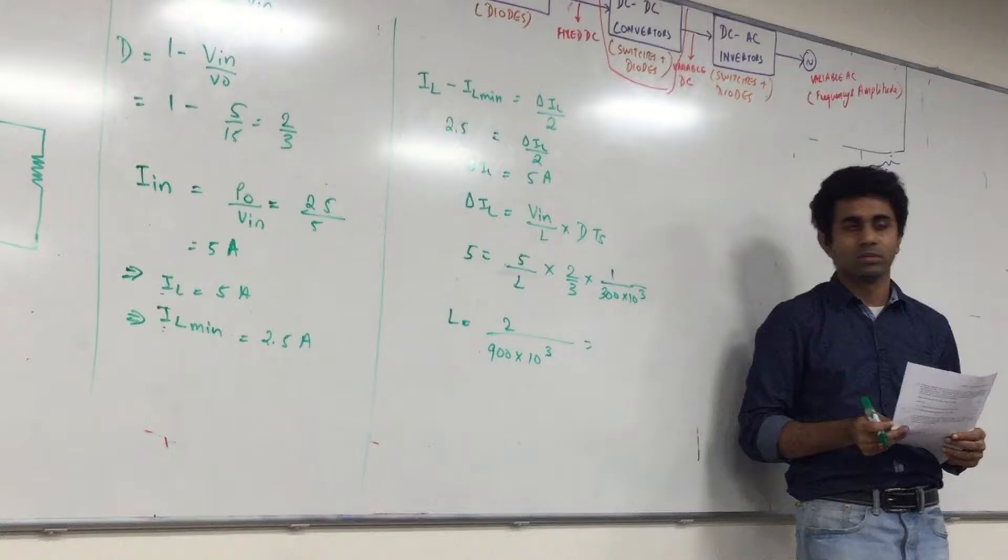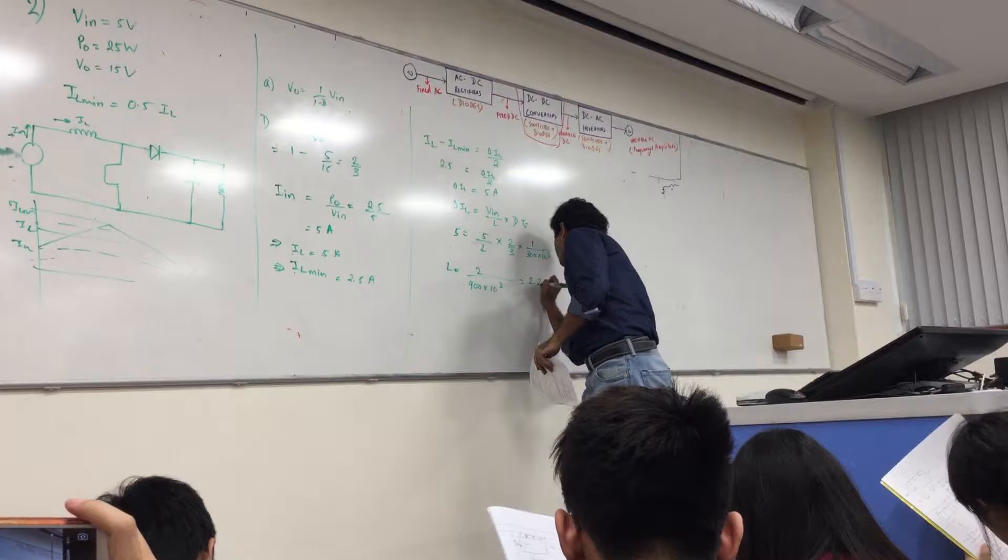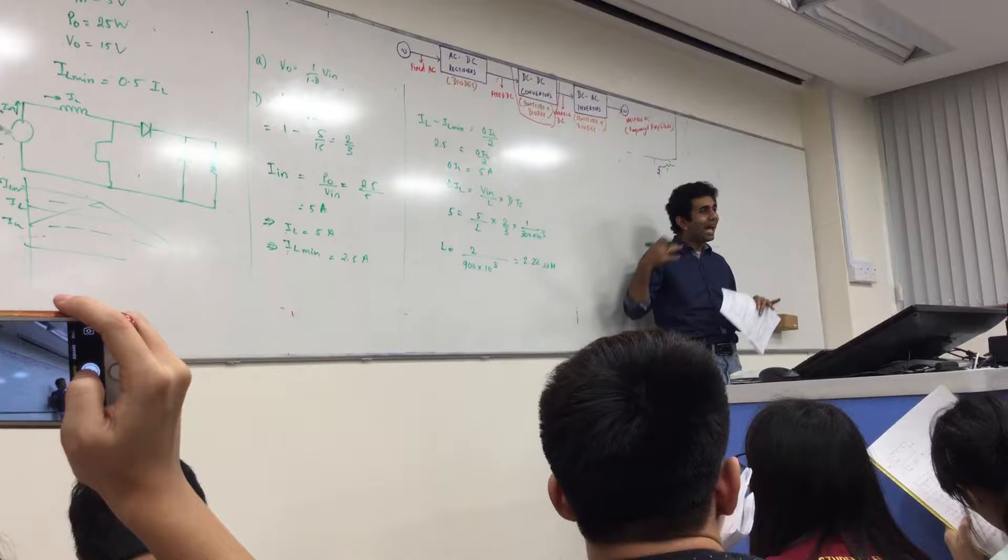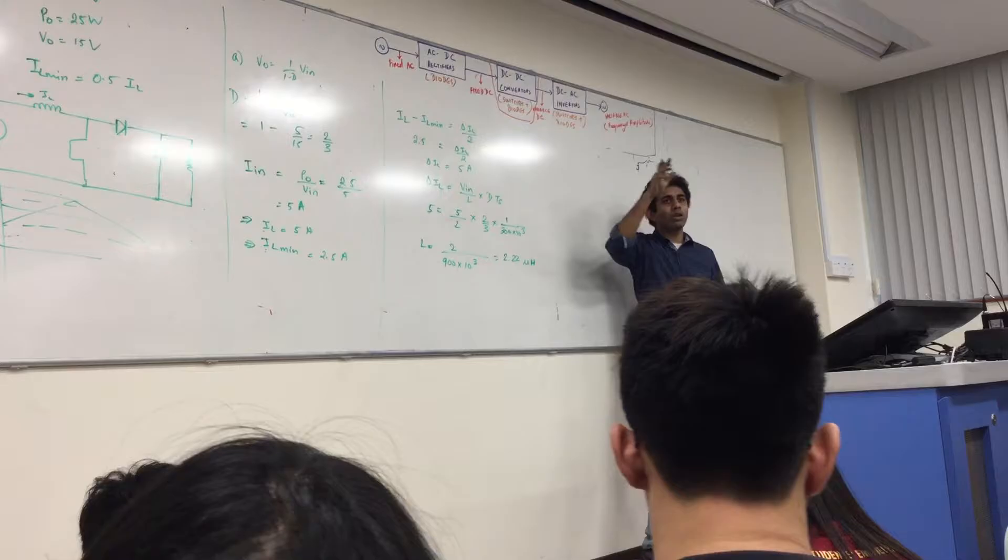What is delta IL basically? This slope multiplied by the time. Another slope - slope is just Vin by L. So delta IL is just Vin by L into T times D. Do I know all other values? This is 5, this is also 5. L into 2 by 3 into time - frequency is 300 kilohertz.